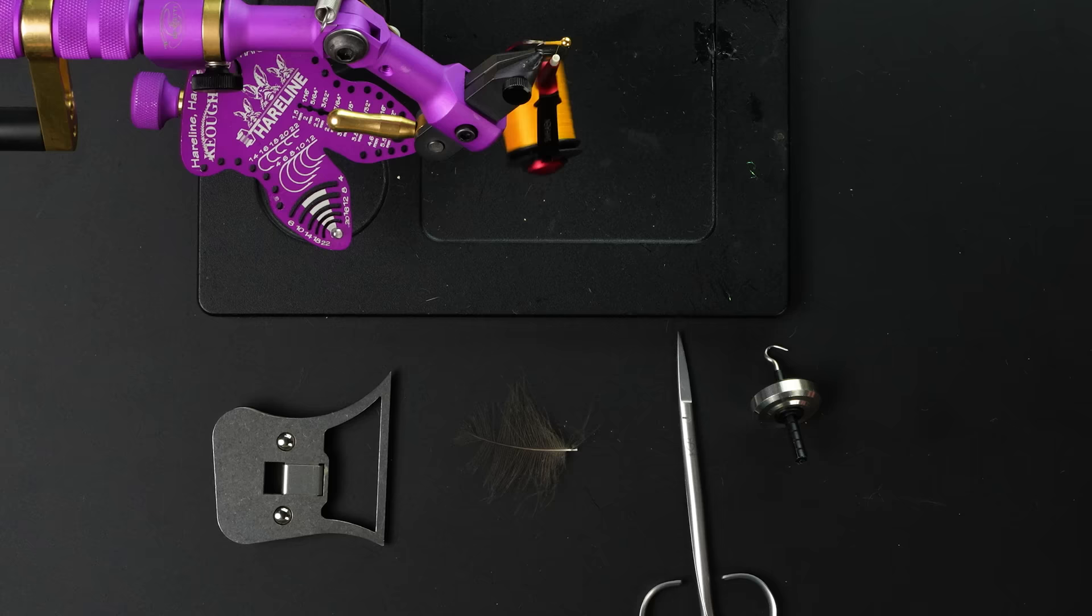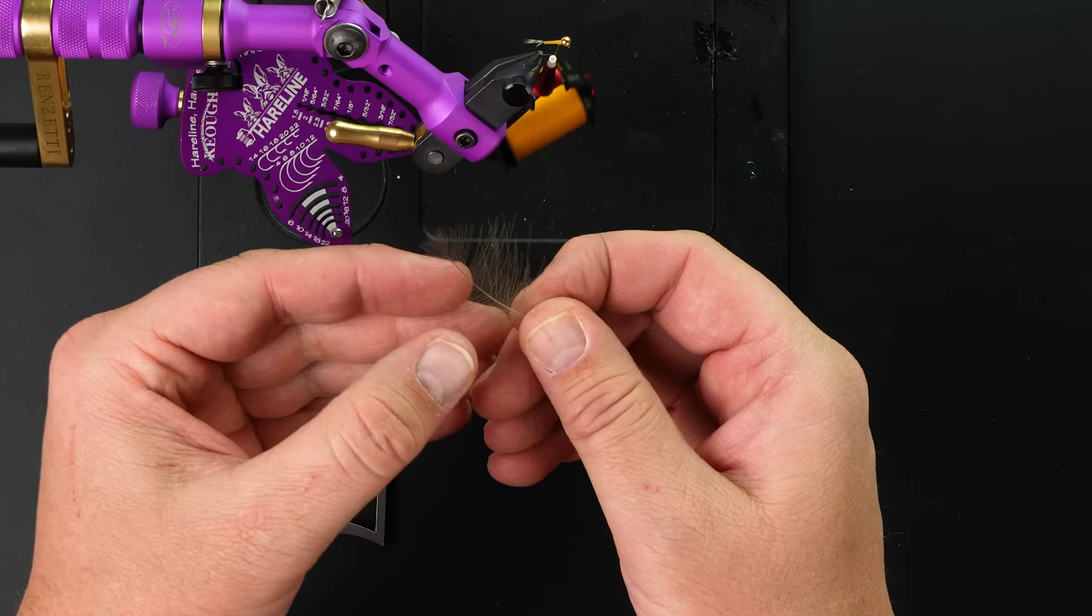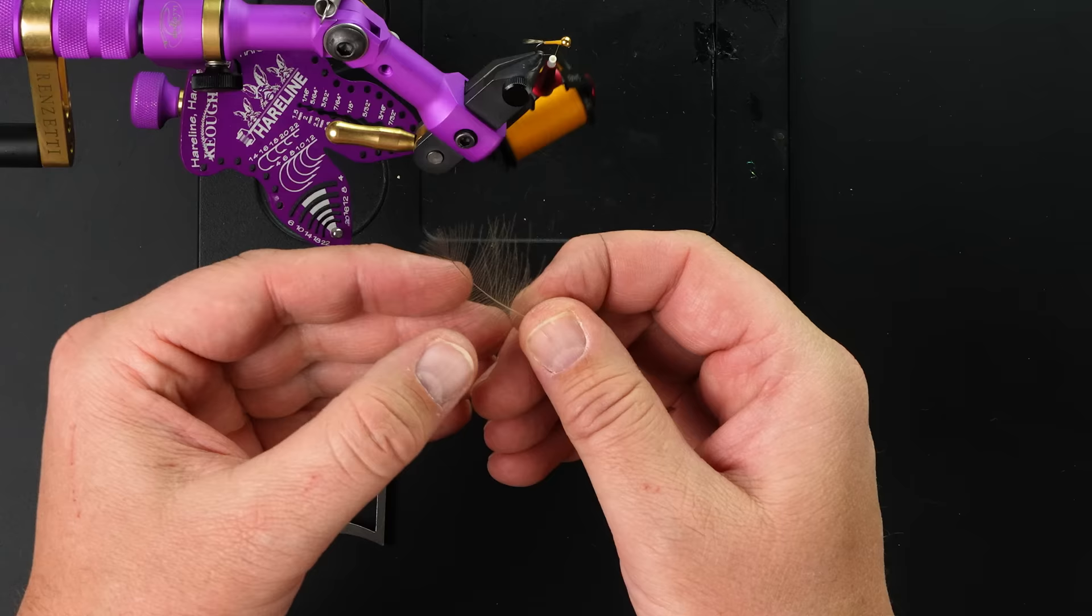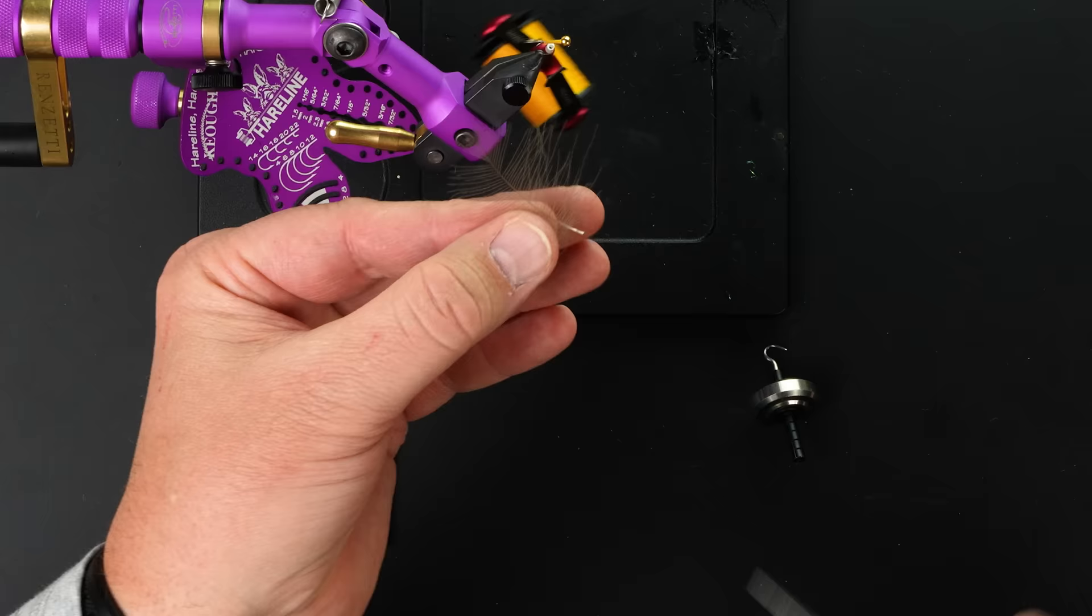I'm going to show you how to add proportionate legs to your little Euro jigs or nymphs or whatever you want to do. I have this really nice piece of CDC. So I'm going to use half of this and I'll show you how I prep it. So I'm going to get rid of the butt. And now these fibers are way too long for this fly. So what I'm going to do, and Brigham told me I had to shout out my daughter Audrey because she knows how to cut hair.